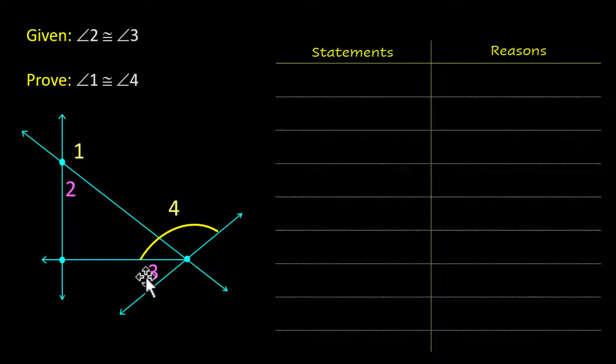If we know that 2 and 3 are the same size and we can subtract those out, that leaves whatever's left over have to also be equal to each other. So 1 has to equal 4. Let's just start writing it up and then we'll do statements and reasons. So let's start with our givens.